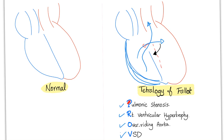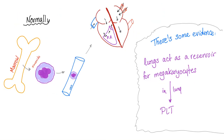Can you name the tetralogy of Fallot? Sure — pulmonary stenosis, right ventricular hypertrophy, overriding aorta, and VSD. It's just one anomaly with four consequences if you think about it.